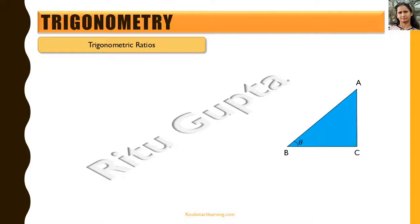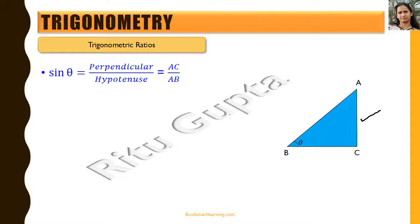Now let's see the different trigonometric ratios. We have triangle ABC with acute angle theta at B. Sine theta is one of the trigonometric ratios: sine theta equals perpendicular upon hypotenuse. For this angle theta, AC will be the perpendicular and AB is the hypotenuse. So sine theta equals AC divided by AB — perpendicular by hypotenuse. The short form of sine theta is 'sin'.